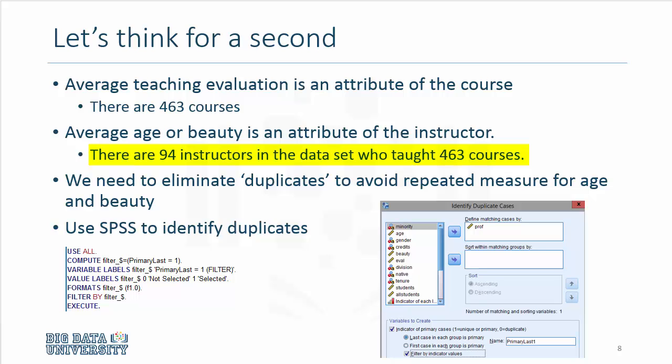We know from our data that there are 94 instructors who have collectively taught 463 courses, and we know that there are duplicates — the same instructor who has taught multiple courses. So when I compute the average age using 463 courses, it's not necessarily the average age of the instructors, because older individuals may have taught more courses than younger individuals, resulting in a higher average.